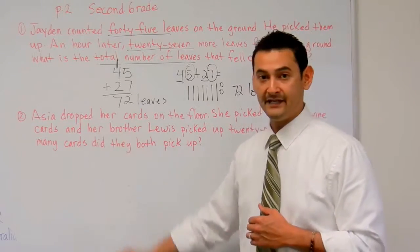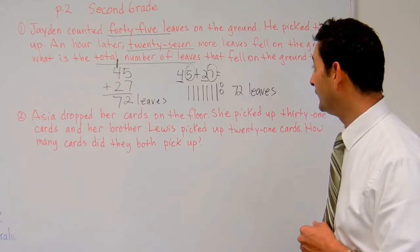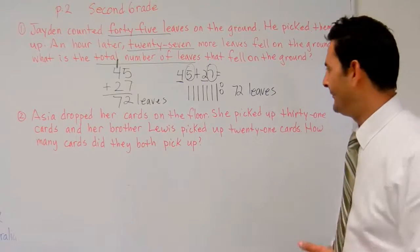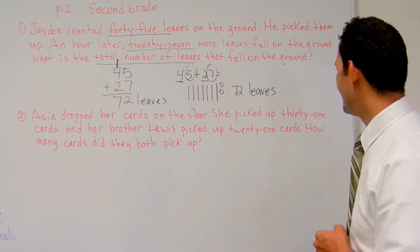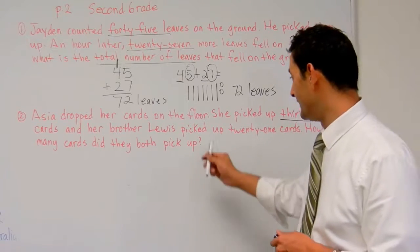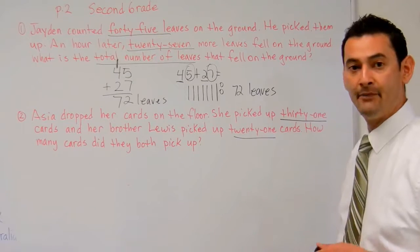Let's take a look at number 2. It reads, Asia dropped her cards on the floor. Wow, everybody's, like, dropping stuff and having to pick them up. Oh, my goodness. She picked up 31 cards. And her brother, Louis, picked up 21 cards. How many cards did they both pick up?